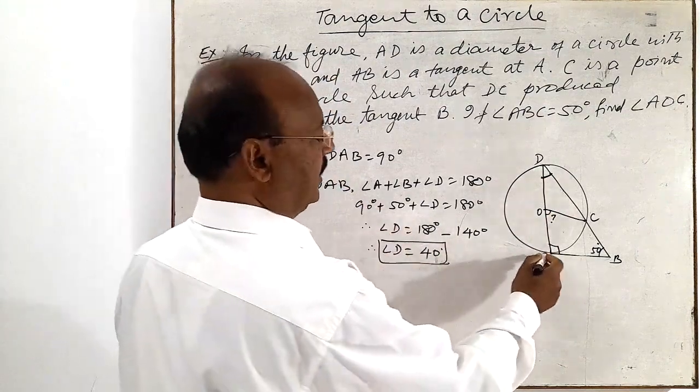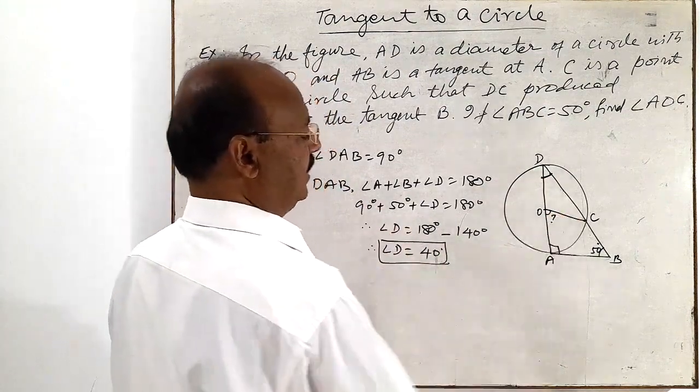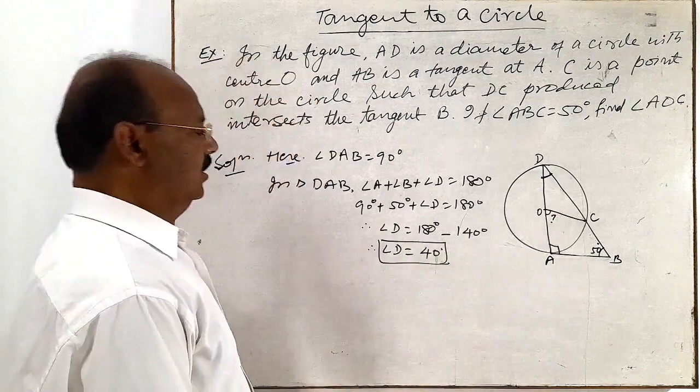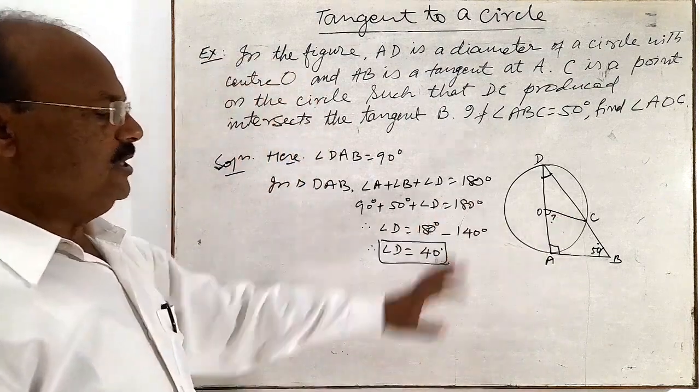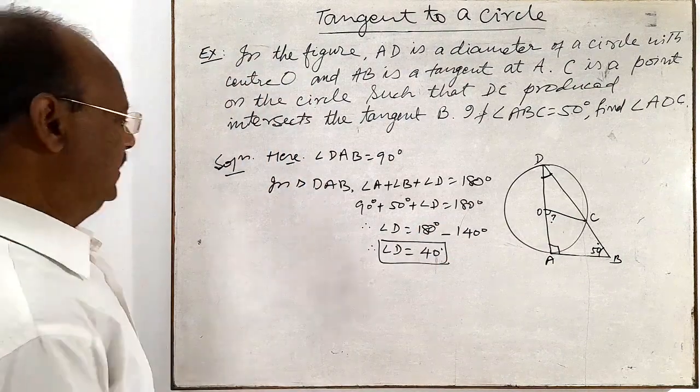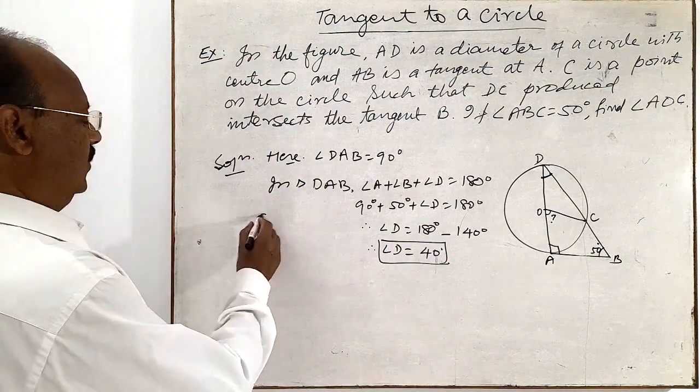Now we can find angle AOC very easily. We can use a property of the circle.